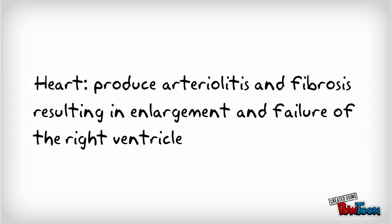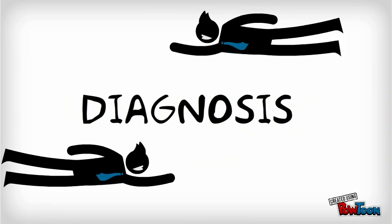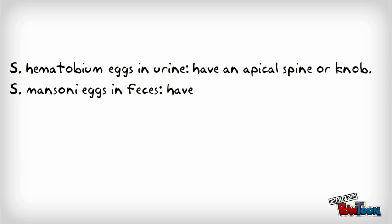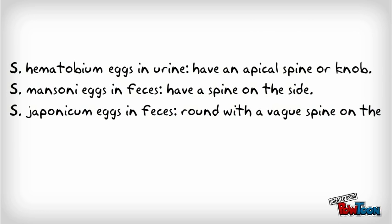Diagnosis is according to the morphology of the eggs. S. haematobium eggs found in urine have an apical spine or knob. S. mansoni eggs found in feces have a lateral spine on the side. S. japonicum eggs found in feces are round with a vague lateral spine.